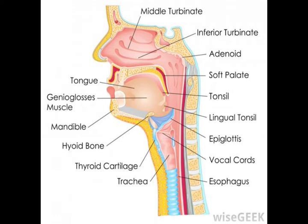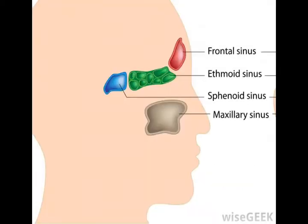In addition to the mandible, the splanchnocranium includes two maxilla, two palatine bones, two zygomatic bones, two nasal bones, two lacrimal bones, and two inferior nasal conchae.